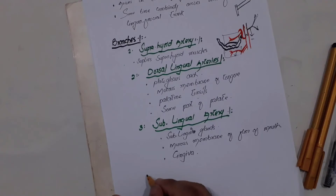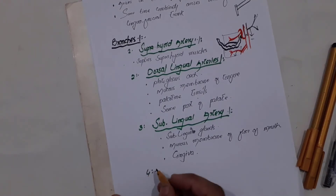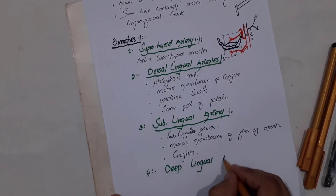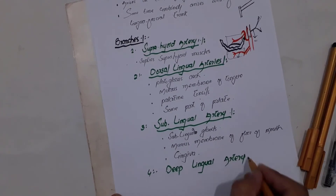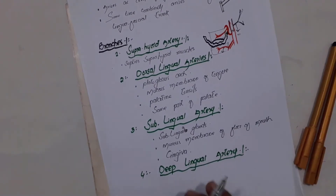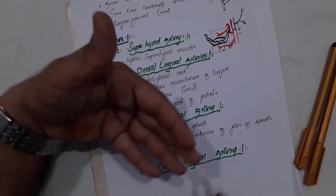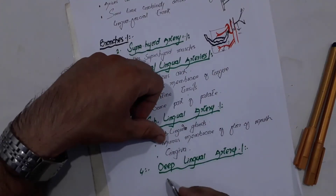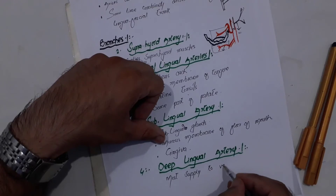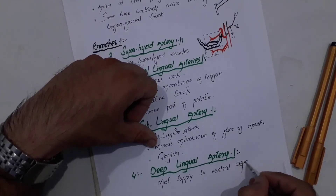The fourth and final branch is called the deep lingual artery. The deep lingual artery is responsible for supplying oxygenated blood mostly to the ventral aspects of the tongue.